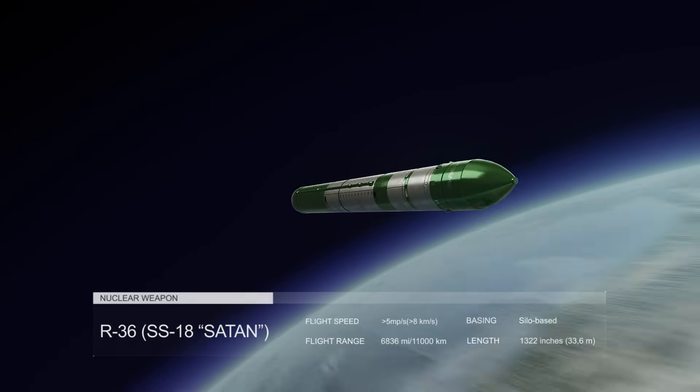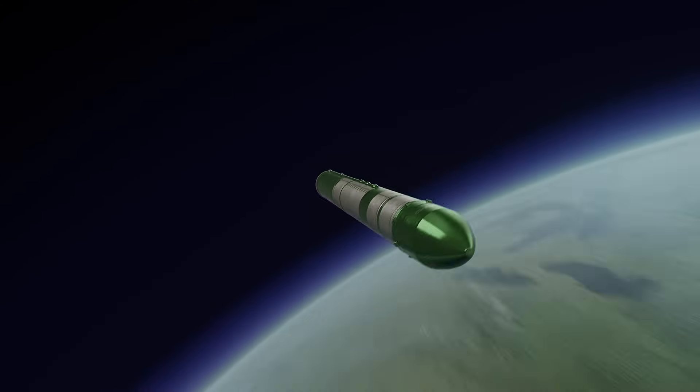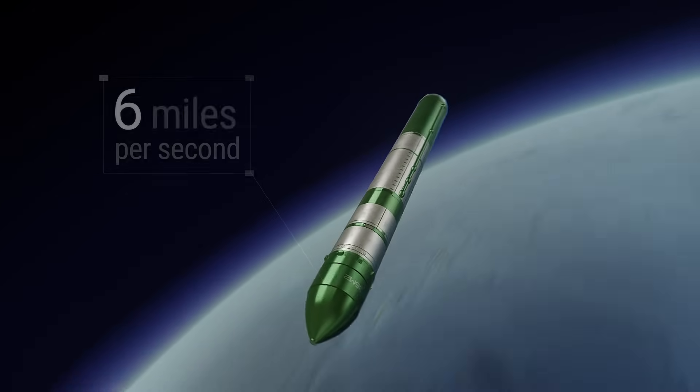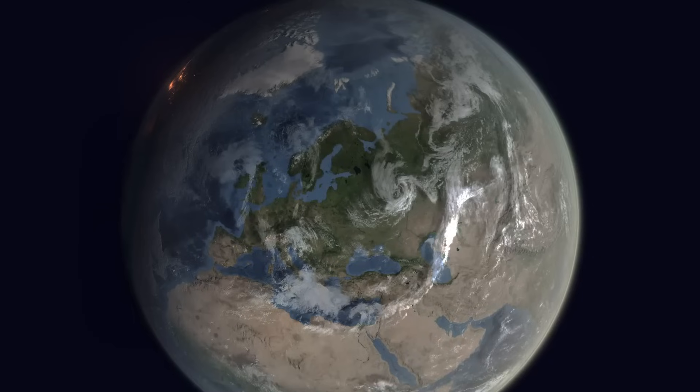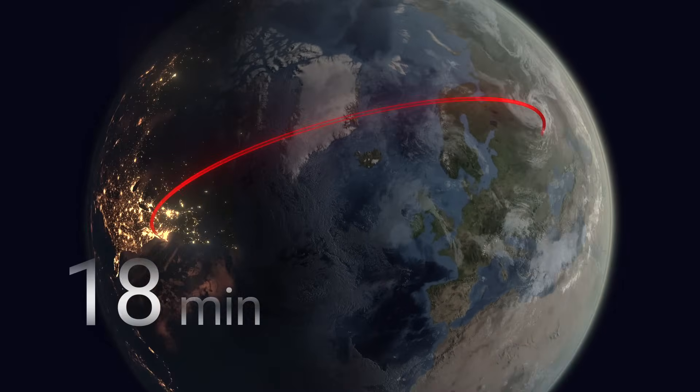The missile system with this ICBM is designed to hit all kinds of targets, including those protected by modern missile defenses. The flight speed of this missile reaches more than 5 miles per second, which provides it with the ability to fly from Moscow to New York in 18 minutes.